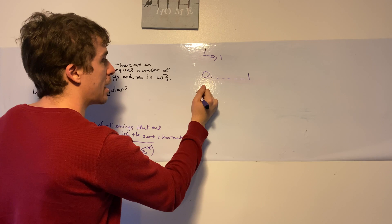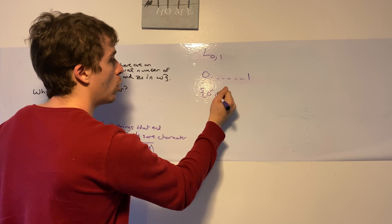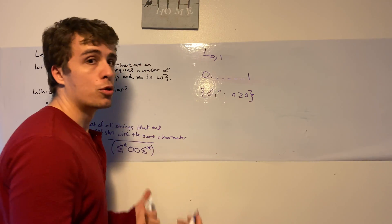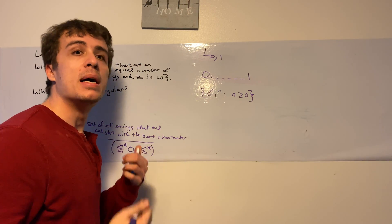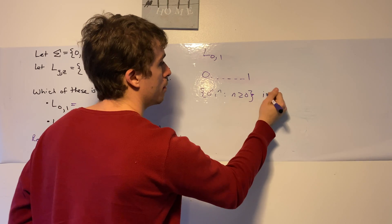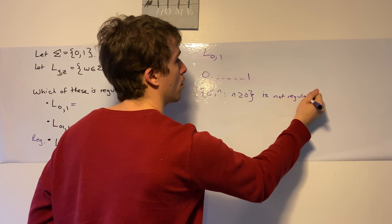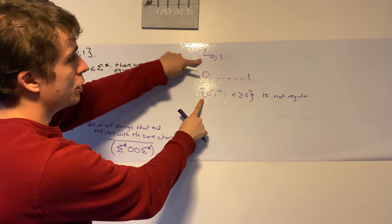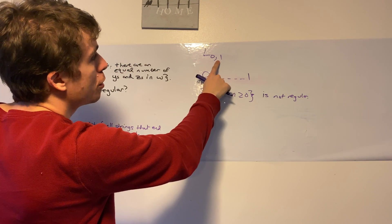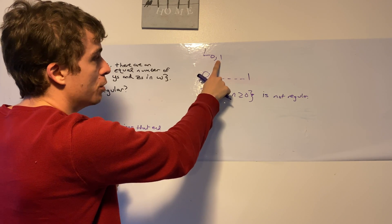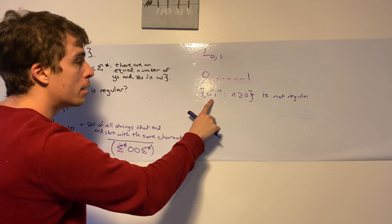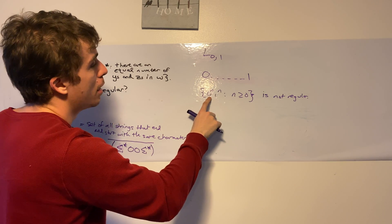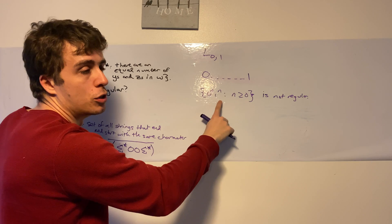So let's actually think about this. If you recall the language 0 to the n, 1 to the n, where n is at least 0, I haven't proved it yet on a video yet, but this is not regular. There's actually quite a similarity between these two languages, because this says every single string with the same number of 0s and 1s. Here is a subset of this, but that doesn't really tell us very much, other than it has the same number of 0s and 1s.